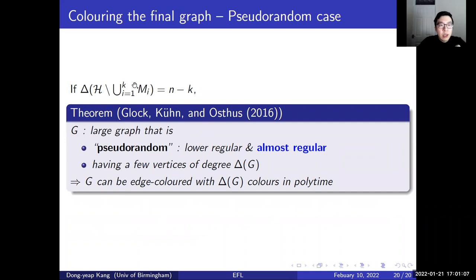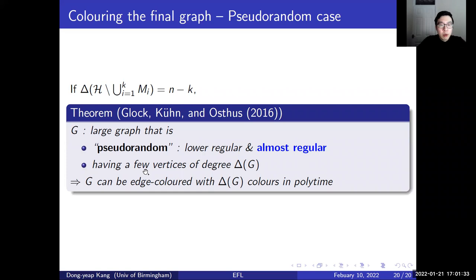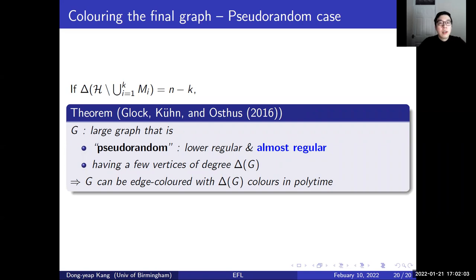On the other hand, if the leftover graph has maximum degree exactly n minus k, then using the structural information we obtained, we apply a result by Glock, Kühn, and Osthus regarding coloring pseudorandom graphs: if a graph is pseudorandom and has only a few vertices of degree equal to the maximum degree, then the graph can be edge colored with Δ(G) colors in polynomial time. Using this result instead of Vizing's theorem, and combining with the k color classes, we deduce that our hypergraph can be colored with n colors. This concludes the demonstration of step 2, and this is the end of the talk. Thanks for listening.